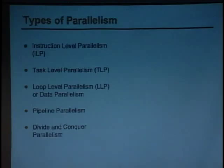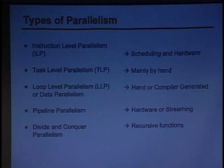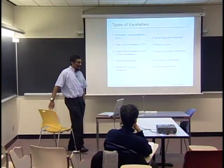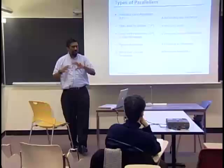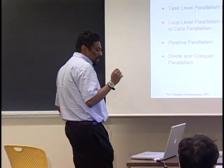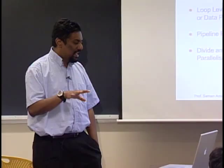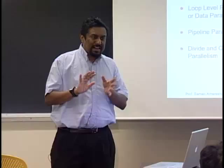In parallel execution — this is a review — there are many ways of parallelism. Instruction level parallelism is basically extracted by hardware or compiler scheduling, and as of today this is in abundance in all superscalars and VLIWs. Then there's task level parallelism, which is what most of you are doing now — you divide programs into tasks, mainly by hand. Some of you might be doing data level parallelism, and also loop level parallelism, which can be hand or compiler generated. Pipeline parallelism is mainly done in hardware, and there's also divide and conquer parallelism.